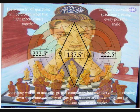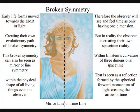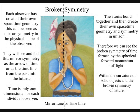This broken symmetry can also be seen in mirror symmetry within the physical shape of all living things, even the observer. Therefore, the observer will see and feel time as only having one dimension, but in reality, the observer is creating their own space-time geometry in three-dimensional space.